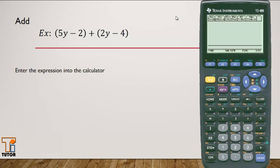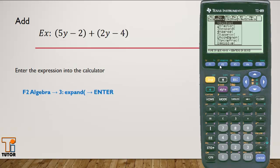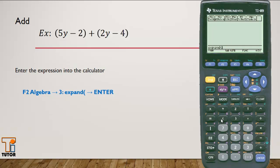First we'll enter the expression into the calculator. To do so, we'll press F2, which is the algebra function. I'll scroll down to expand and press enter. Notice it gives me a begin parenthesis. Now I'll enter my expression. I'll use a begin parenthesis for my first binomial and put in 5y-2. I'll close it off.